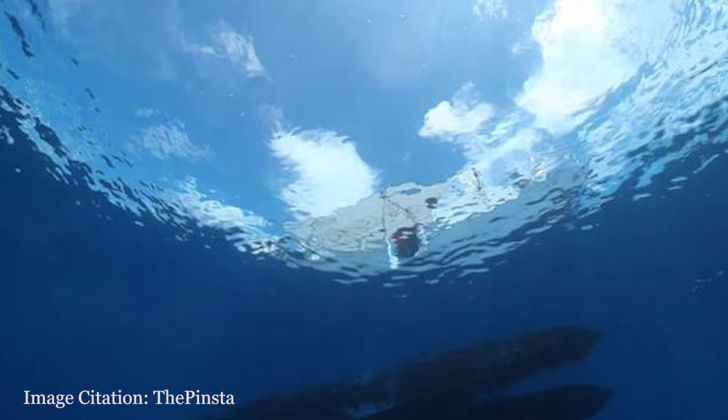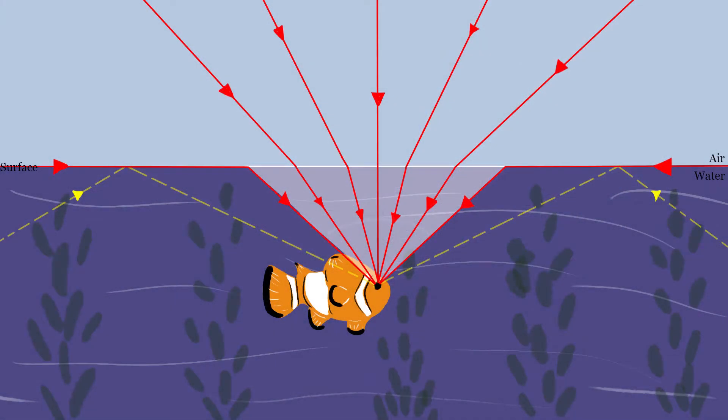This illustrates what is referred to as a fish-eye lens. Fish can see quite a bit above the waterline because of light bending toward the normal.